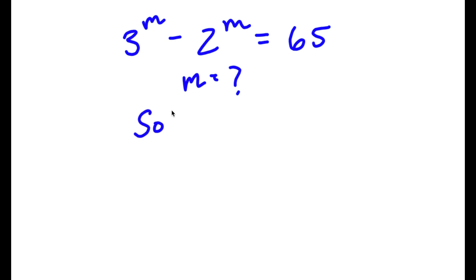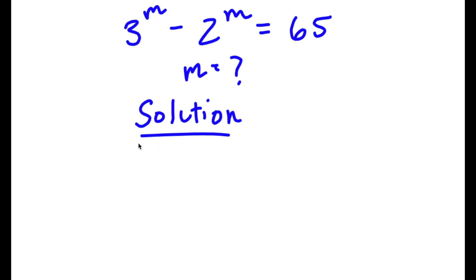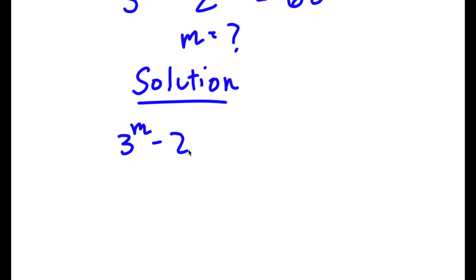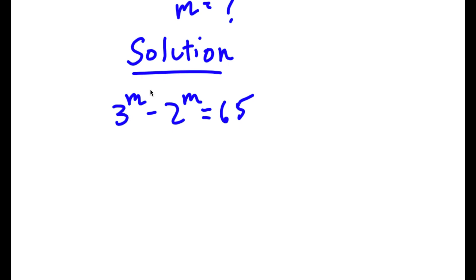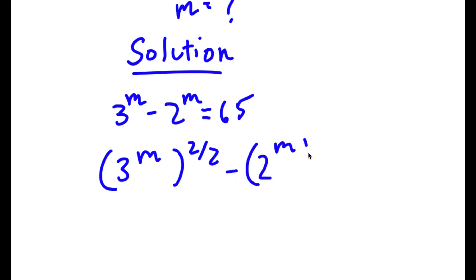For our solution, we start with 3 to the power of m minus 2 to the power of m is equal to 65. Now, 3 to the power of m is the same thing as 3 to the power of m to the power of 2 over 2, and since 2 over 2 equals 1, that's just 3 to the power of m. Same thing for 2 to the power of m — 2 over 2 is 1, so it's simply 2 to the power of m.